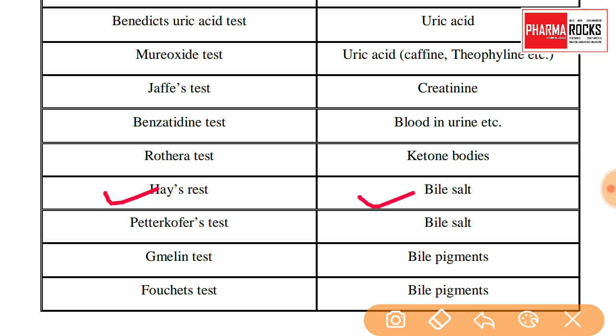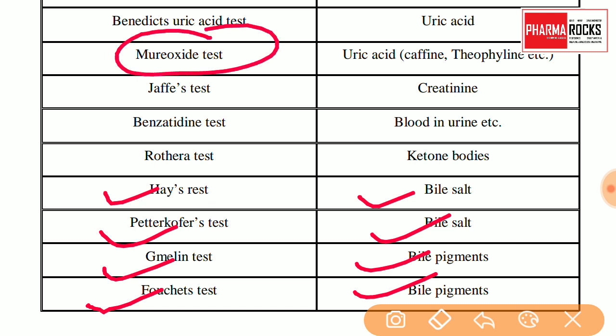Hay's test is for bile salts. Then Peter Koffer's test is also for bile salts. Gmelin's test is for bile pigments, and Fouchet's test is also for bile pigments. इसमें से exam में murexide test, Rothera test, and Hay's test सबसे ज़्यादा पुछे गए हैं, but the remaining tests are also very important. इसमें से table पुछा जा सकता है — match the test with the sample identification, column A and column B को match करके भी MCQ पुछा जा सकता है।